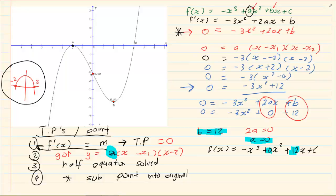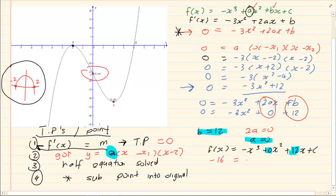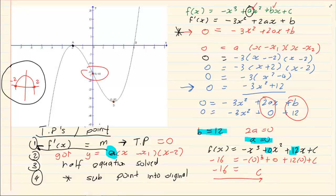So f(x) equals minus x³ + 0x² + 12x + C, where the 0 and 12 come from what we just calculated. To find C, take the other point which is (0, minus 16) and substitute: minus 16 equals minus 0³ + 0 + 12 times 0 + C. That gives C equals minus 16. Now we have solved for a, b, and c.